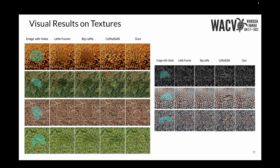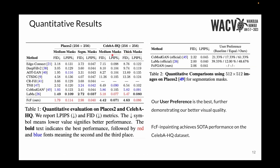We also present results on texture images and find that our model outperforms the other two baselines with realistic completions. Our FCF inpainting sets new state-of-the-art performance on the CelebA-HQ dataset and is competitive on the Places2 dataset with major improvements over ComodGAN. We also conduct a user study on Places2 images and find that our user preference score is the best, proving the effectiveness of our method.